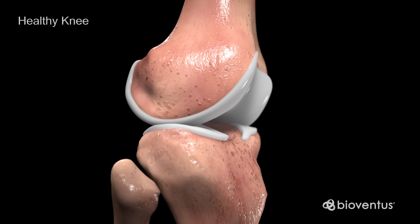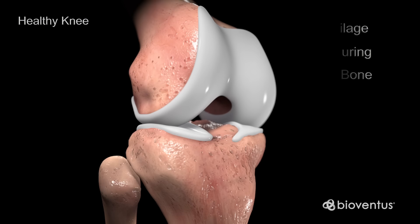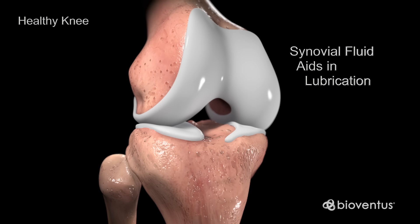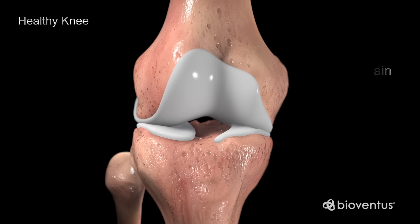In a healthy knee, the articular cartilage is smooth, without fissuring, and the bone is smooth. The synovial fluid is viscous, aiding in lubrication. The knee can move through its range of motion without pain.